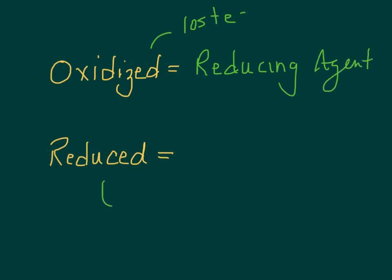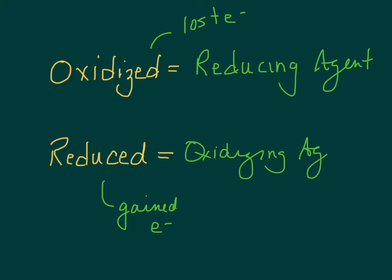When something is reduced, we know that it has gained electrons, and we're going to call it the oxidizing agent. When something is reduced, it gains electrons, causing the other thing to lose electrons or be oxidized. So it's the thing that causes the other thing to be oxidized — it's the oxidizing agent. Or just remember that they're opposite.